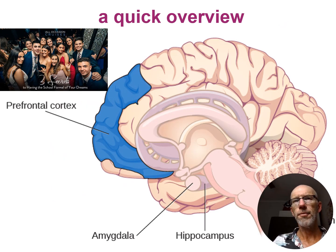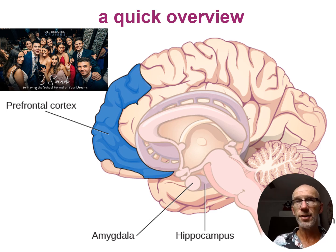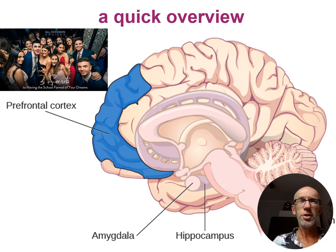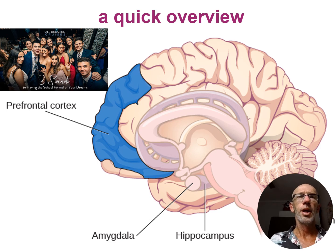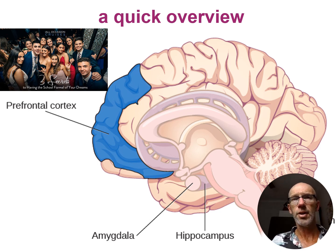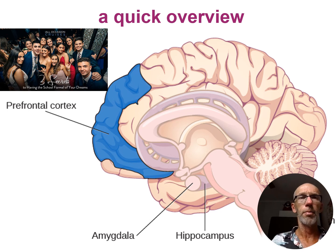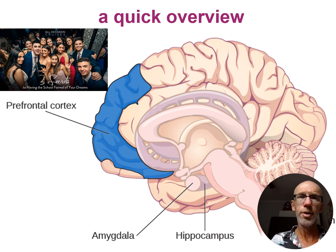Before we get into some of the specific details of the three structures, I just want to bring it all together for a quick overview and let's relate this to the example of your memory of a school formal. I want to do this in four stages.